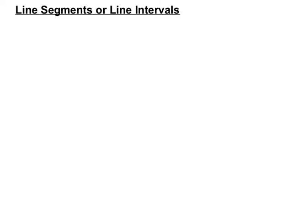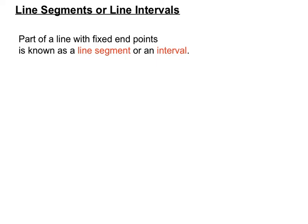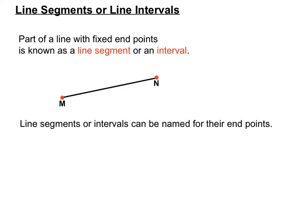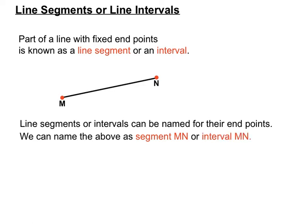Line segments, or line intervals. Part of a line with fixed end points so that the section of the line doesn't go on forever — it's just one section we're considering. You can see there are no arrows at either end, indicating it doesn't go on forever. We're just considering the section between points M and N. We would call that either segment MN or interval MN, named for the two points at either end.